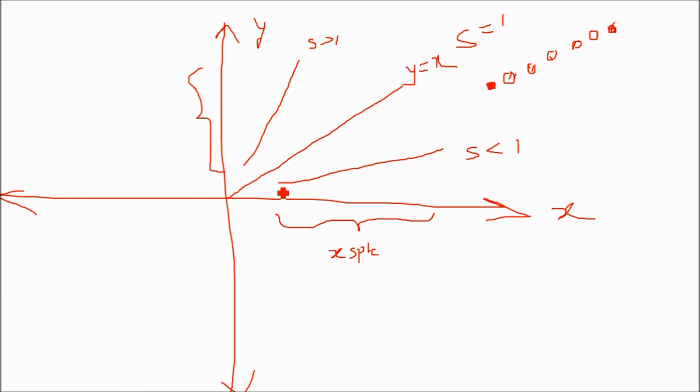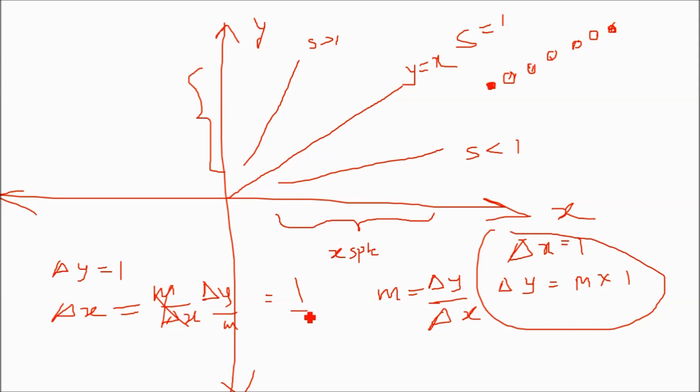In DDA algorithm, wherever spread is more, you have to add 1 in that direction, means in the x values you have to add 1 and other value you have to calculate based on the slope equation. Slope equation is m equals delta y upon delta x. If delta x equals 1, then delta y can be calculated as m times 1. If delta y is known and equals 1, then delta x equals delta y upon m, which is 1 by m.